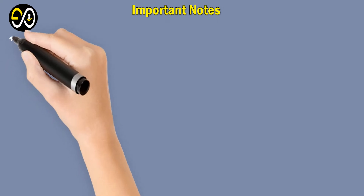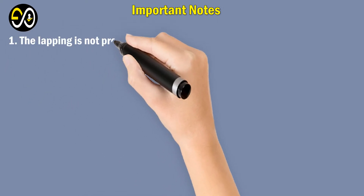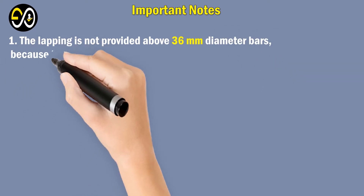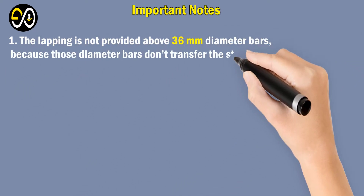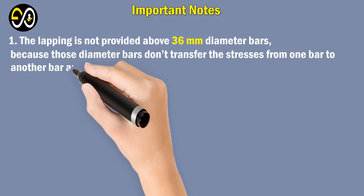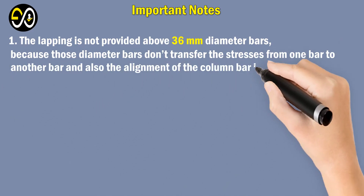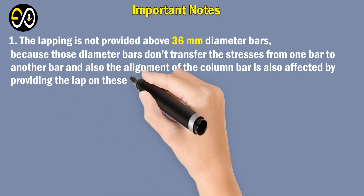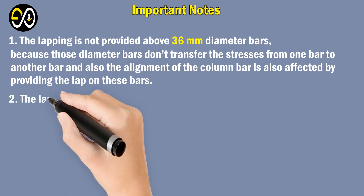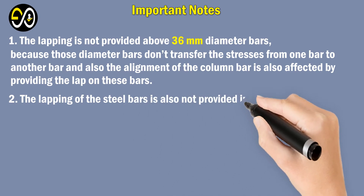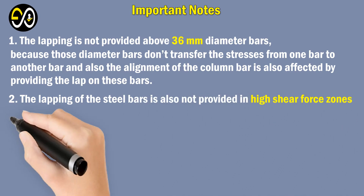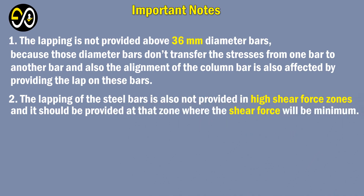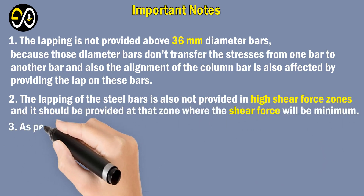Important notes: one, lapping is not provided for bars above 36 mm diameter, because those bars do not effectively transfer stresses from one bar to another, and the alignment of column bars is also affected. Two, lapping of steel bars is also not provided in high shear force zones; it should be provided only where the shear force is minimum.